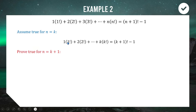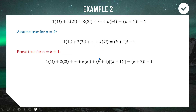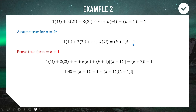For the assumption, we set n equal to k and assume the statement holds true. For the proof step, n = k+1: on the left we add the next term (k+1)(k+1)!, and the right-hand side target becomes (k+2)! − 1. Using the inductive hypothesis, everything up to k·k! equals (k+1)! − 1, so we substitute that in.